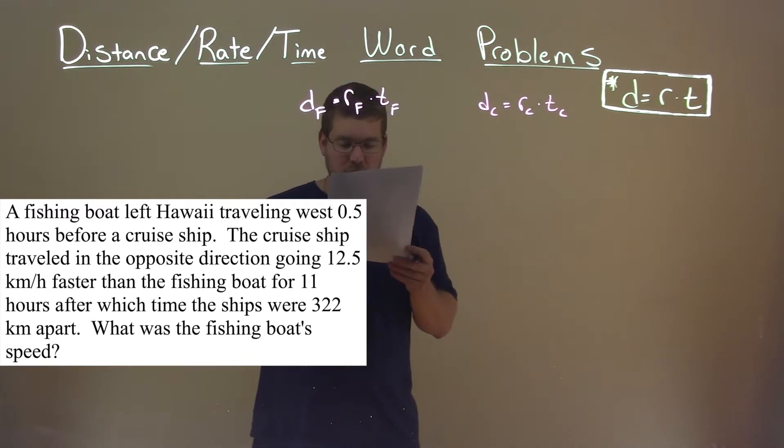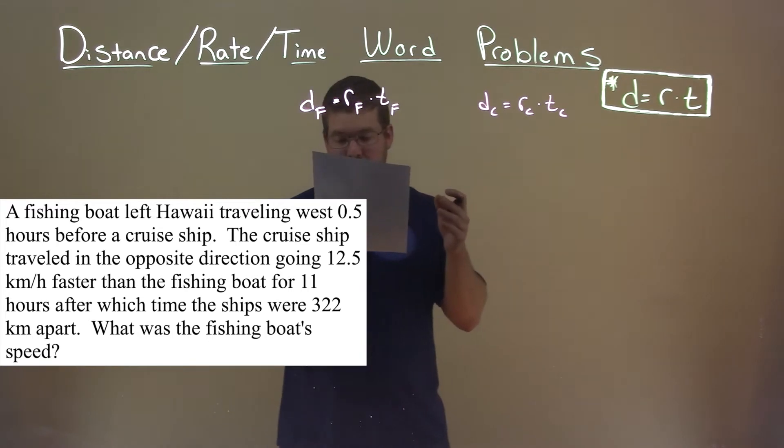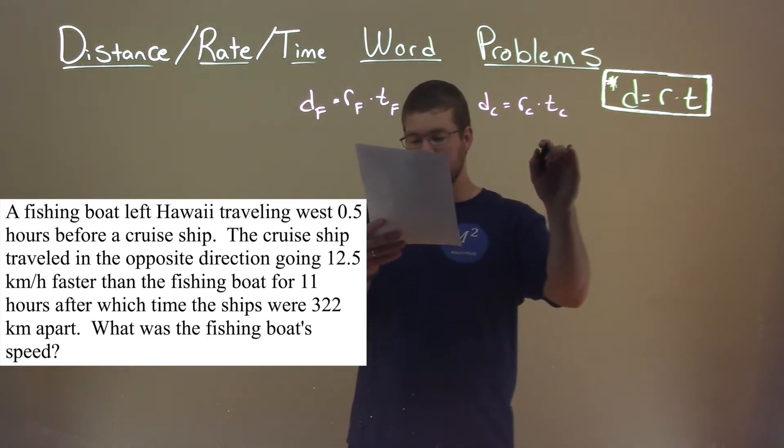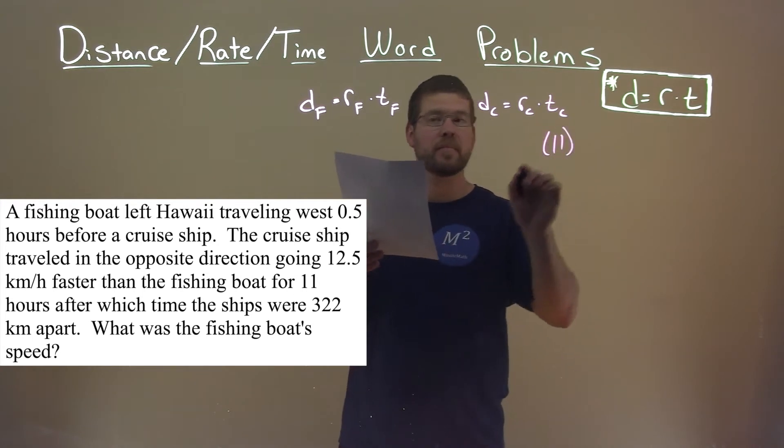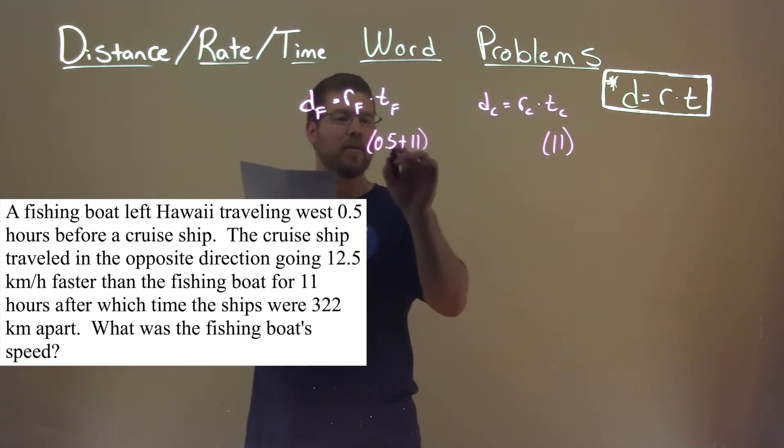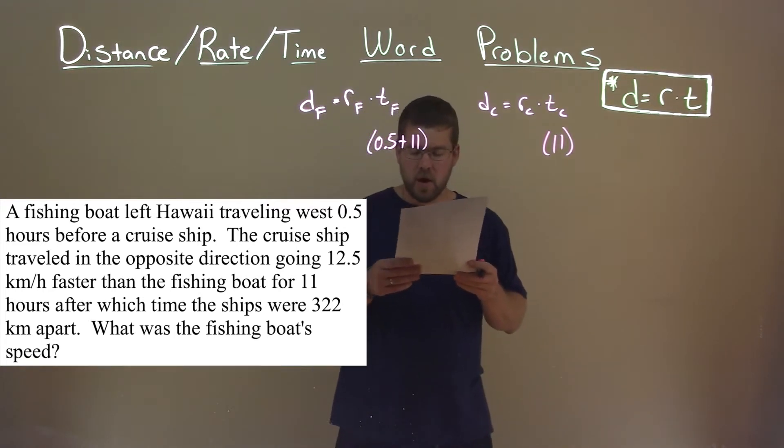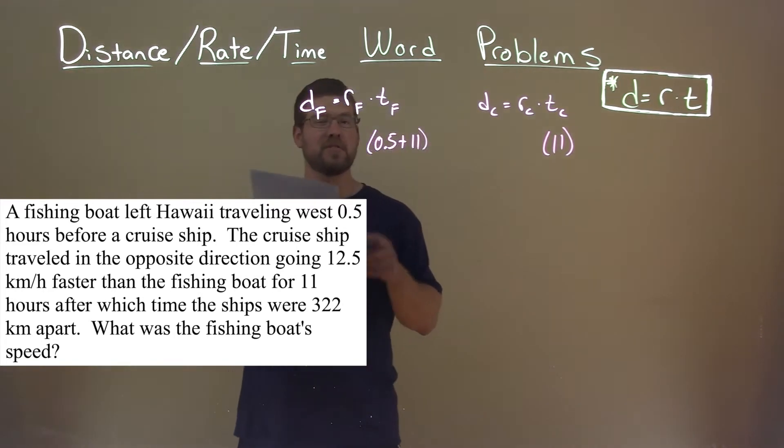So, the fishing boat, let's go down. The cruise ship left later, 0.5 hours later, and traveled a total of 11 hours. So the time of the cruise ship is 11 hours. The fishing boat left 0.5 hours earlier, so it's 0.5 plus that 11 hours. And that's the time the fishing boat was up there.